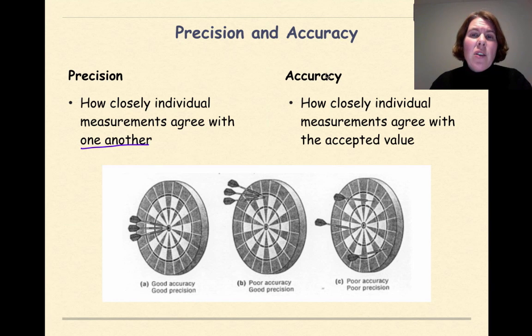Compare that to accuracy, and that's how closely individual measurements agree with an accepted value. So with accuracy, you're comparing your measurements to a published value that's out there, whether it's a reliable source on the internet or your textbook. So accuracy always relates back to an accepted value. Precision is how values compare one another.